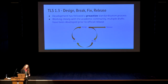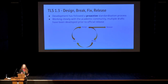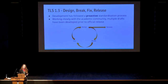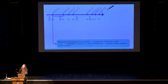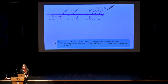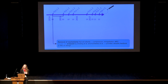The process for TLS 1.3 has been vastly different — very collaborative and proactive. Working closely with the academic community, the TLS working group has released multiple drafts and welcomed analyses on those drafts prior to official release. We call this the design-break-fix-release cycle. In the first few drafts, fixes were incorporated to remove known weaknesses, and from draft 5, academic analyses of TLS 1.3 started to guide and confirm the working group's design decisions.